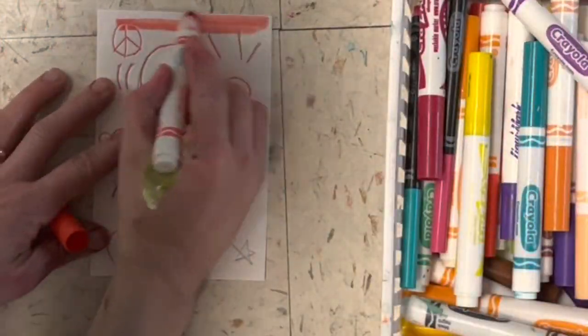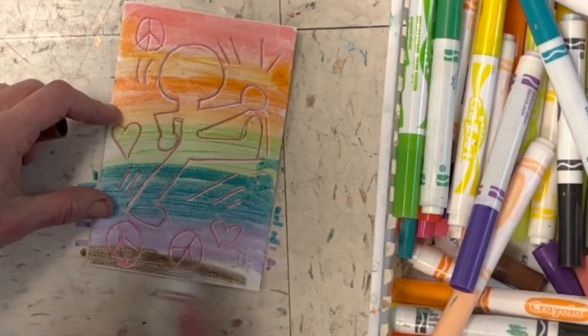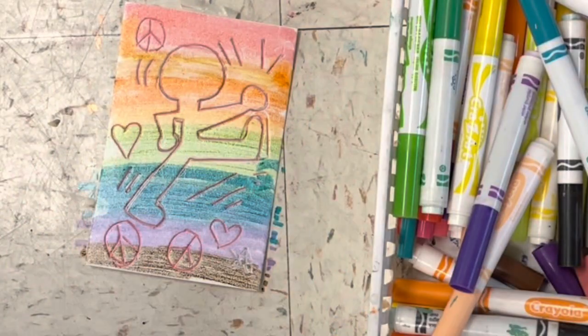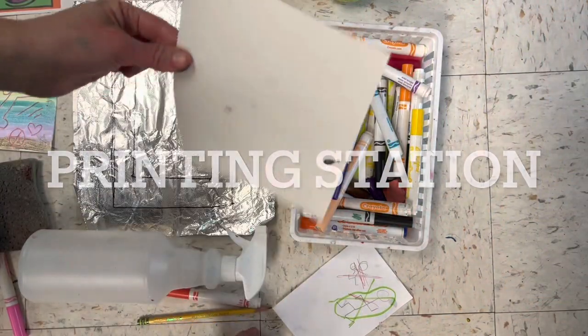Now it's coloring time. Cover your whole styrofoam plate with marker. You can make lots of different prints and color it in lots of different ways. I went for a rainbow on this one.